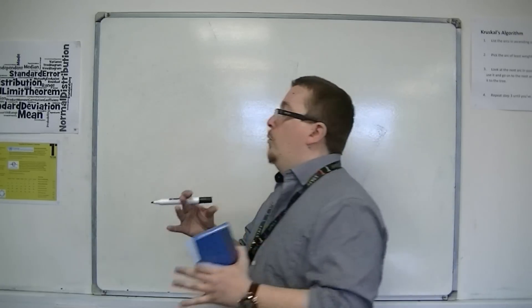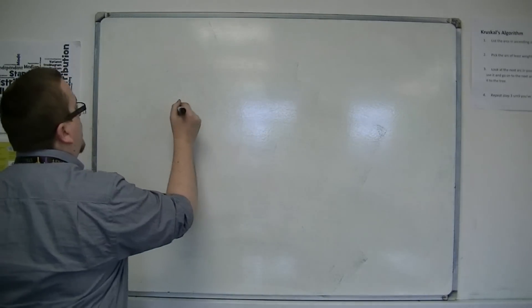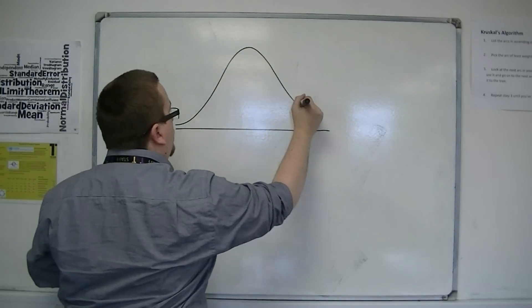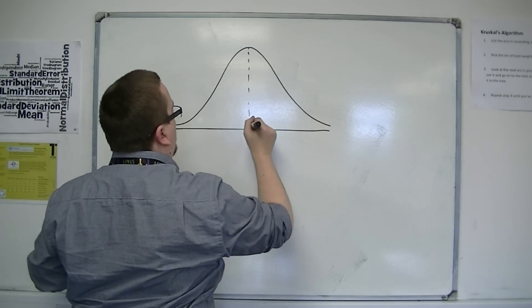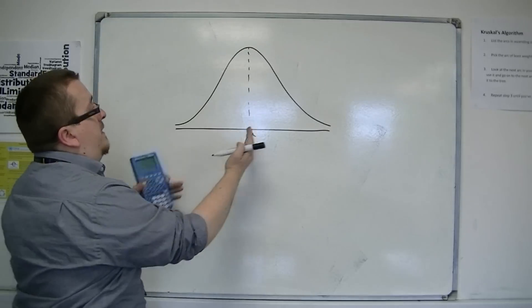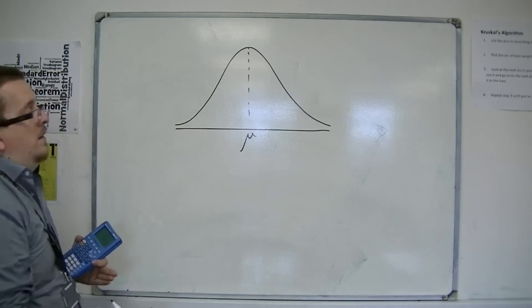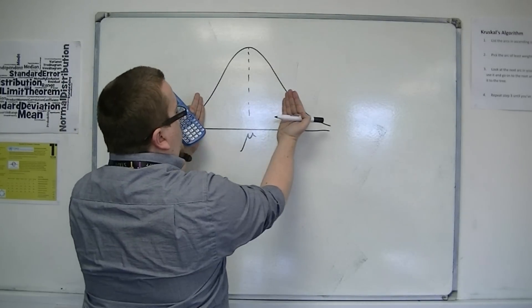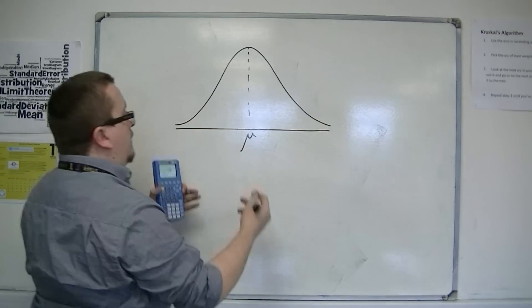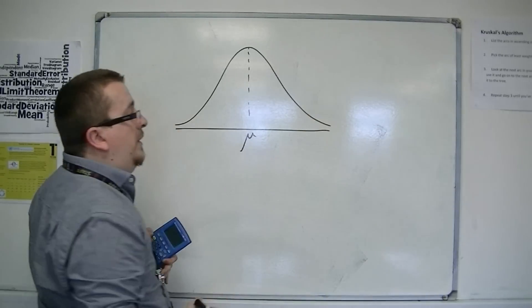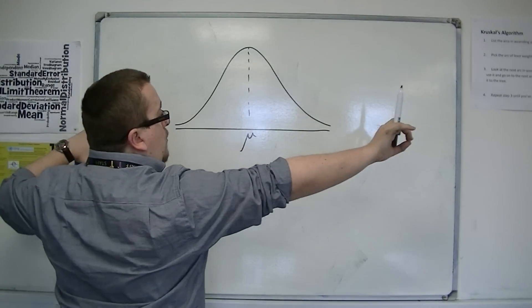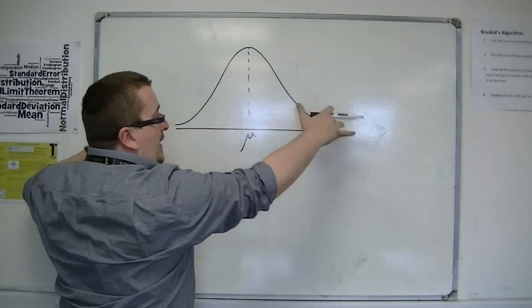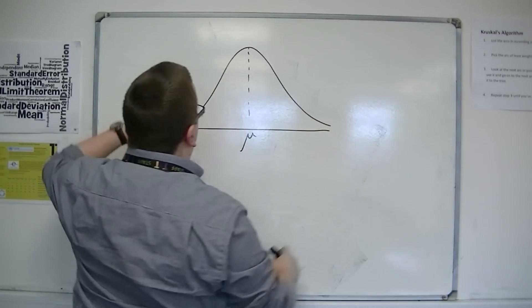So the kind of shape that we would expect would look something like this. So about the mean, the majority of the population that we're considering is in the middle. And then as we get further and further out, we have these tails that tend towards 0 and it's less likely to find people on these outliers.